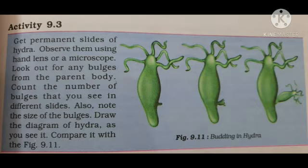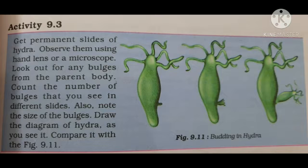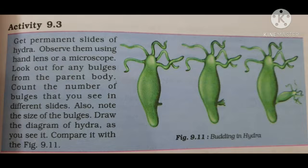Here is an activity: get a permanent slide of hydra and observe it using a hand lens or microscope — look for many bulgings from the parent body. In asexual reproduction, as I already told you, no gametes are required and fertilization does not take place. Only a new individual grows from the parent cell. In hydra, a small outgrowth develops on the body, and it slowly grows, matures, then detaches from the parent body and grows as a separate new individual. This type of reproduction is asexual reproduction, and because the small outgrowth is known as a bud, the method is called budding in hydra.